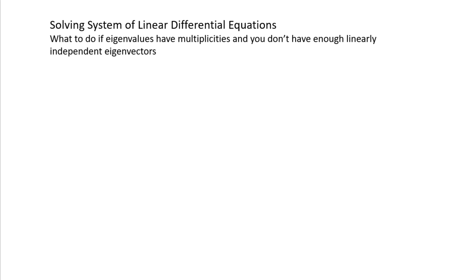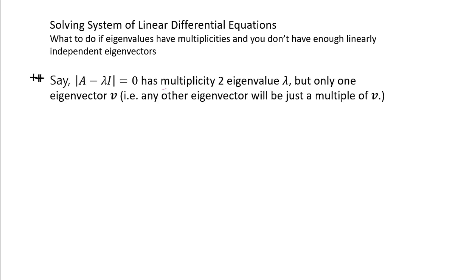What do you do when you're trying to solve a system of differential equations and your eigenvalues are repeated? In other words, when you try to solve the eigenvalue equations, you end up with solutions with multiplicities. If the multiplicity is 3 or greater, it becomes very complicated. I want to show you how to do it for the multiplicity 2 case. If you understand this, the multiplicity 3 or more case should be easy to follow by watching other videos or resources.